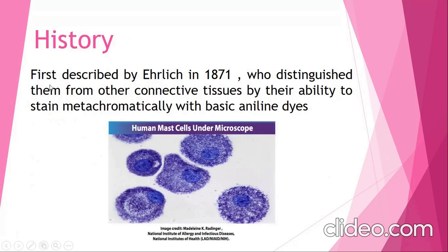History: It was first described by scientist Ehrlich in 1871, who distinguished them from other connective tissues by their ability to stain metachromatically with basic aniline dye. This diagram shows how the mast cells are degranulating and how it is shown under the microscope.